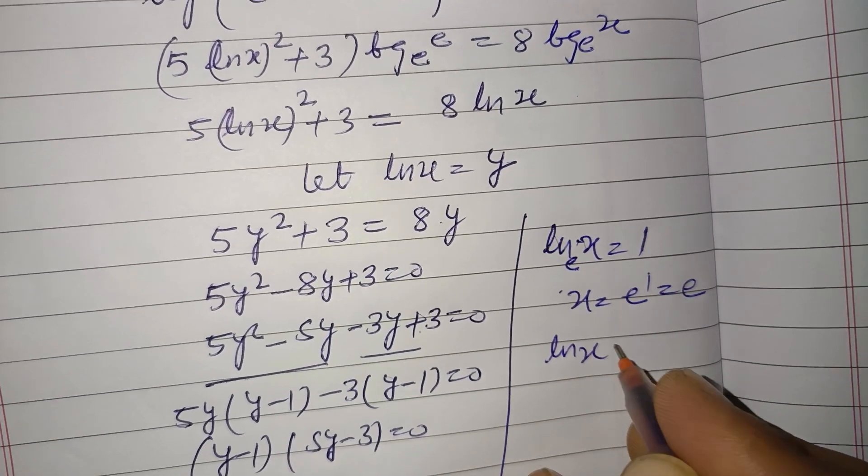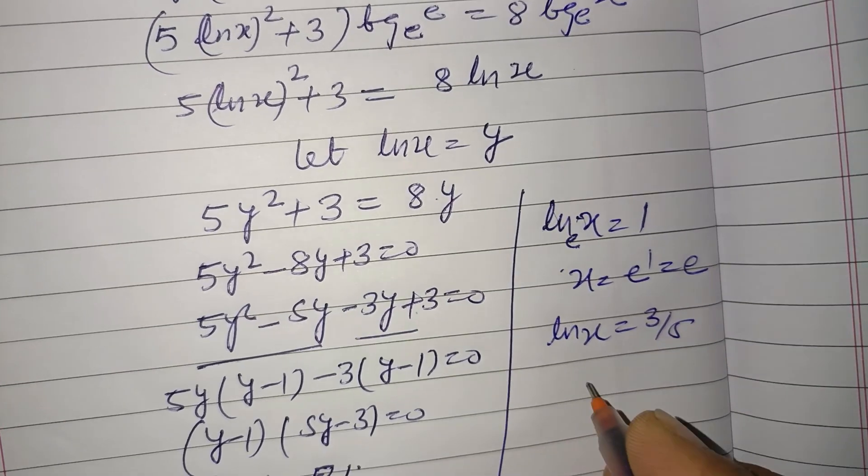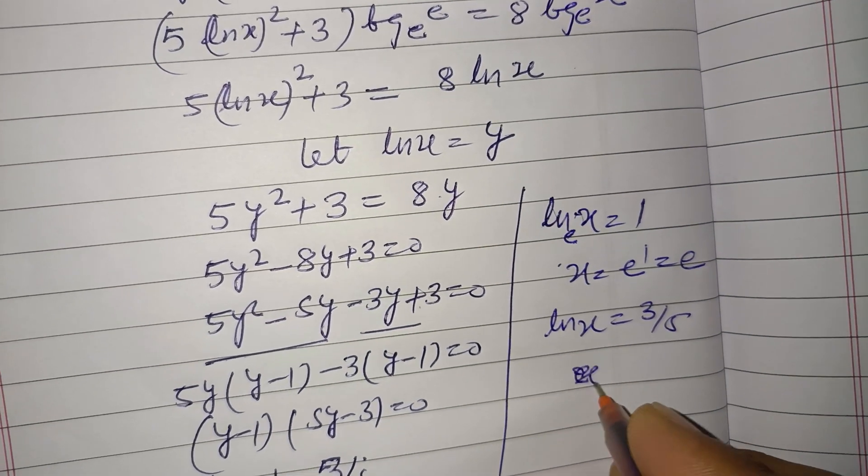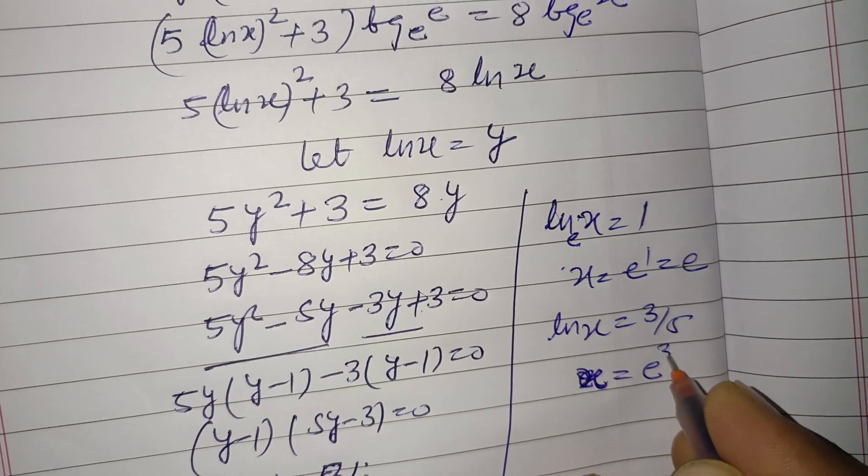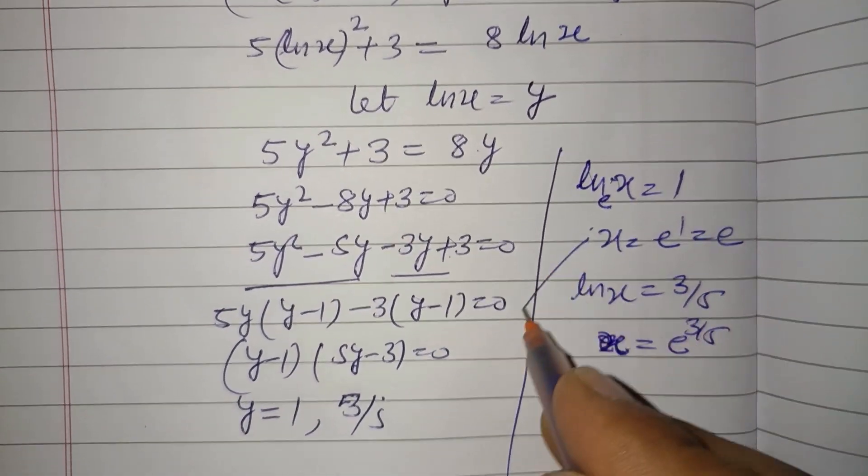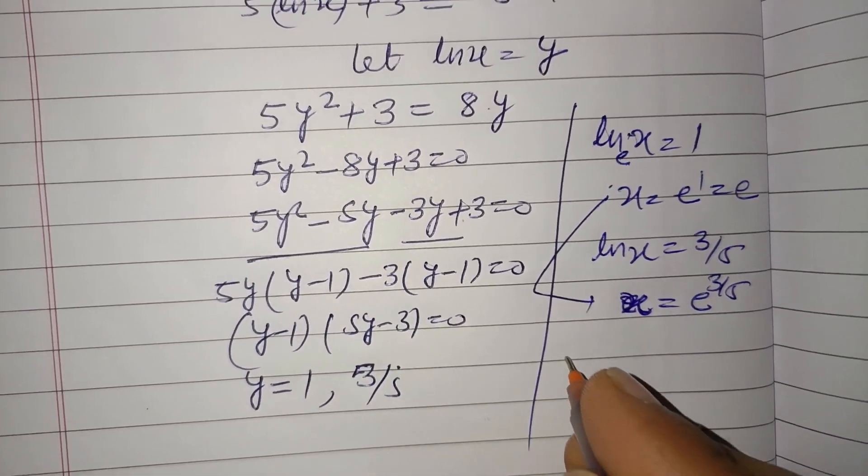Then ln x equals 3/5, so this is base e to the power 3/5. So these two values obtained of x, therefore.